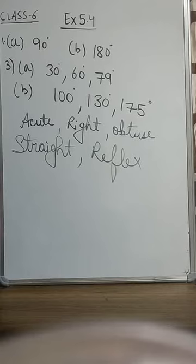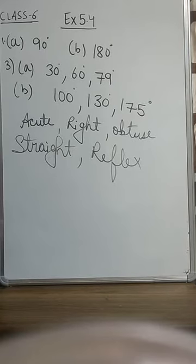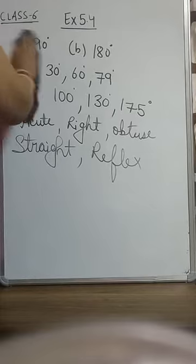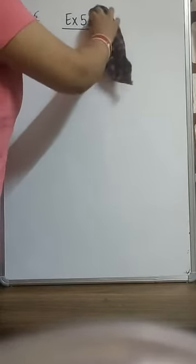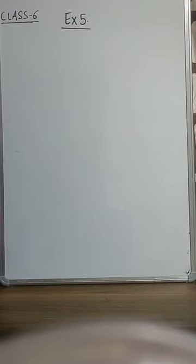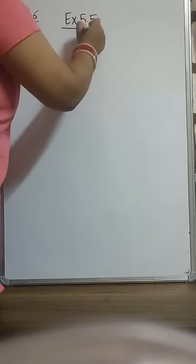You can find angles also in everyday objects — it is very easy. The angle you can calculate with the help of a protractor. So now you can do this exercise very easily. Now we are coming to the next exercise, that is exercise 5.5. I have given you all the definitions very clearly.